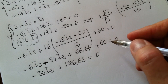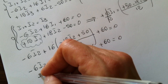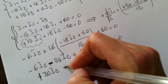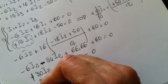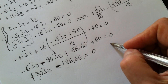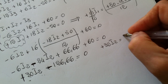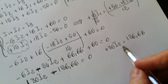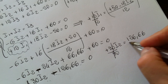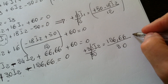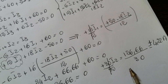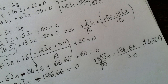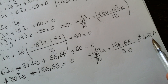We do the same thing as before — we isolate I2 by flipping the signs. Taking 126.66 to the other side gives plus 30·I2 equals 126.66. Dividing by 30, this ratio equals 4.22 amps. It's a plus sign, so it means we chose the right flow direction — I2 is correct and its magnitude is 4.22 amps.